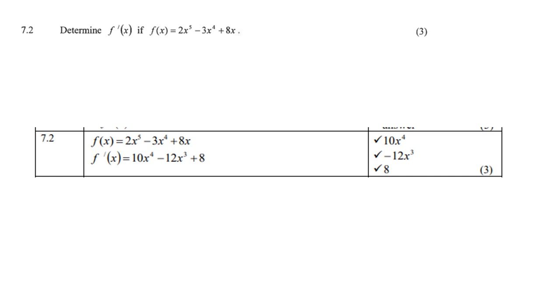7.2, find the derivative. Now it doesn't say first principles, so you are allowed to use the rules of differentiation. Remember, 5 times 2 is 10, and you subtract 1 from 5, which gives you x⁴. Same with 4 times 3 is 12, take 1 away from 4, you get x³. And the same with 8x, 1 times 8 is 8, and the x minus 1 is 0. Therefore, the derivative is 10x⁴ - 12x³ + 8.